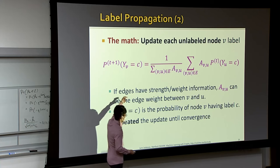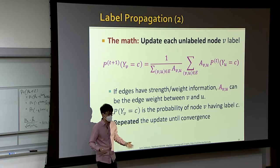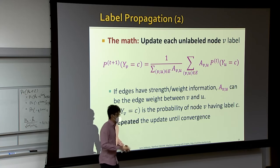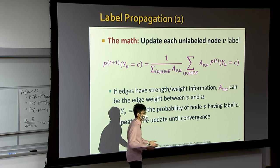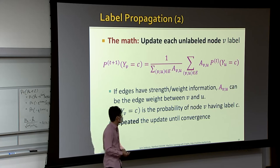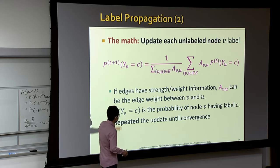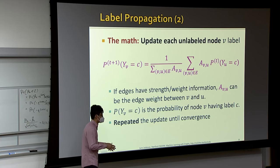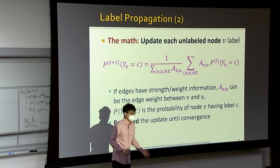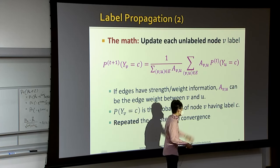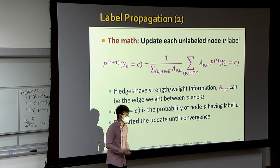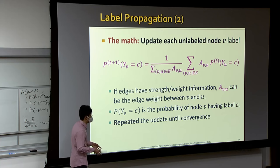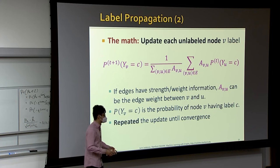This formulation is very similar to mean aggregation in a graph neural network, except we're not learning any embedding — there are no trainable parameters, just an iterative update algorithm. For weighted graphs, we can replace the binary adjacency values A_{v,u} with the edge weights. We repeat the update until the probability vector converges within a certain threshold.